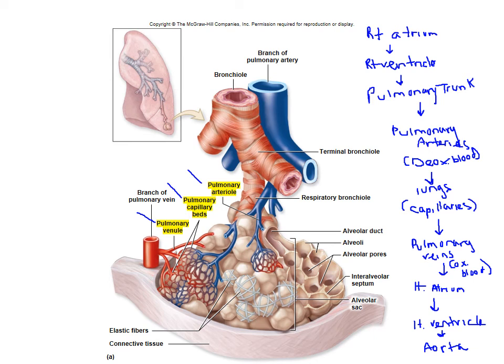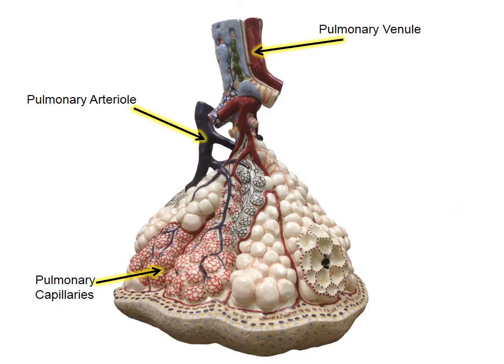Knowing how blood flows from the heart to the lungs, you can see the pulmonary arteriole brings deoxygenated blood to the lungs — shown in blue. It gets oxygenated at the pulmonary capillary beds, then blood leaves through the pulmonary venule — shown in red because it's carrying oxygenated blood. In your Atlas book you'll easily identify the pulmonary arteriole, capillaries, and venule. This is the only scenario where arteries are shown in blue and veins in red. Everywhere else in the body, arteries are red and veins are blue — in the pulmonary sector, it's always the opposite.